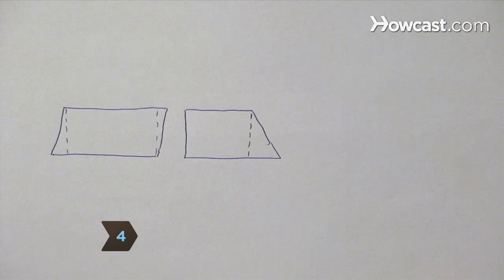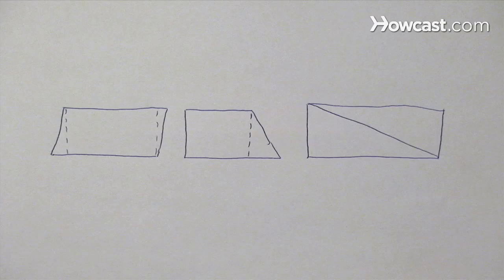Step 4. Be on the lookout for other polygons whose areas can be determined more easily if the polygons are composed of simpler shapes.